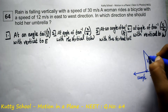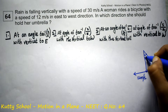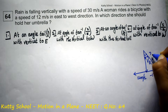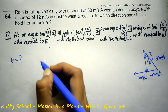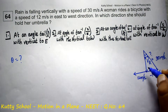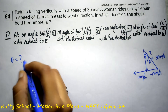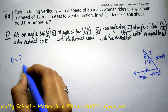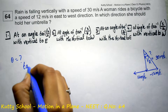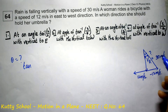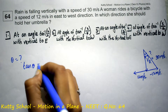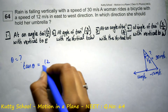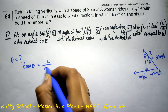Theta is equal to what? In the direction the umbrella will be held. We use tan theta, which is opposite by adjacent. So, tan theta is equal to 12 by 30.